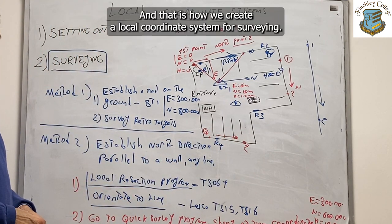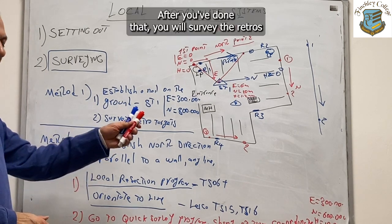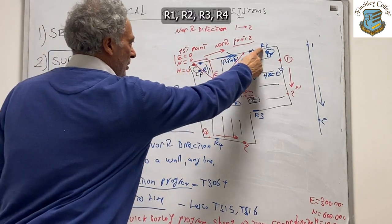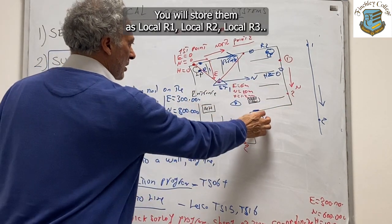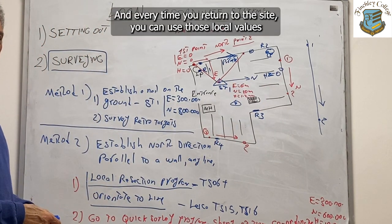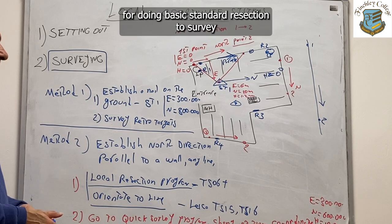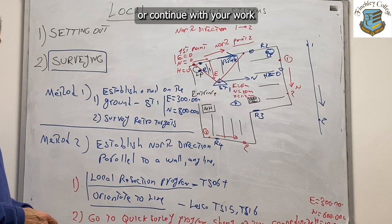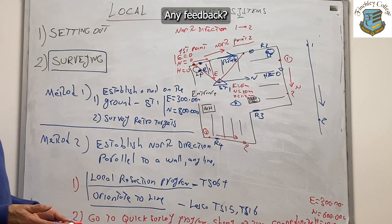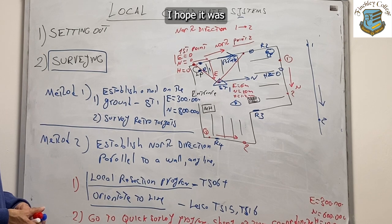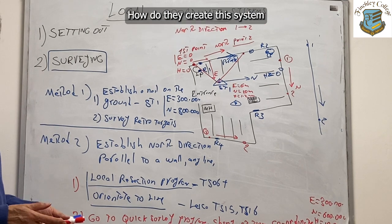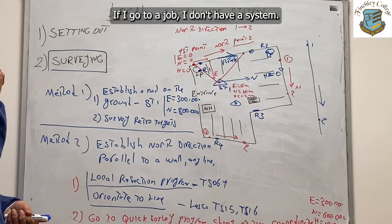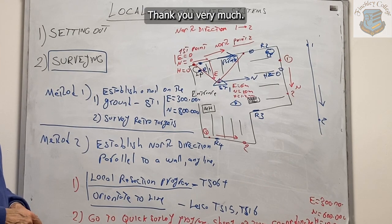And that is how we create a local coordinate system for surveying. After you've done that, you survey the retros — R1, R2, R3, R4 — and store them as local R1, local R2, local R3. Every time you return to the site, you can use those local values for a standard resection to continue your work. These are the two methods for creating a local coordinate system — for setting out and for surveying. Thank you very much.